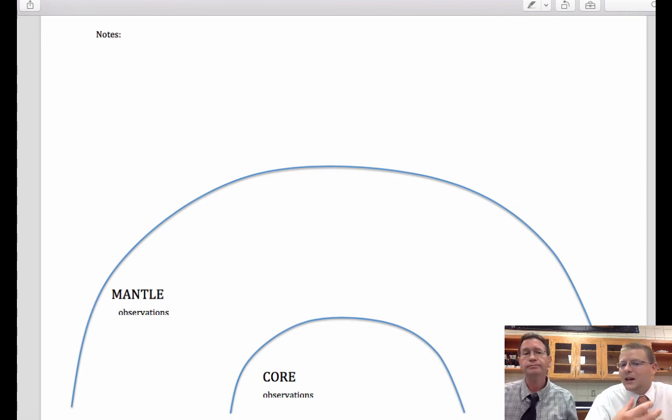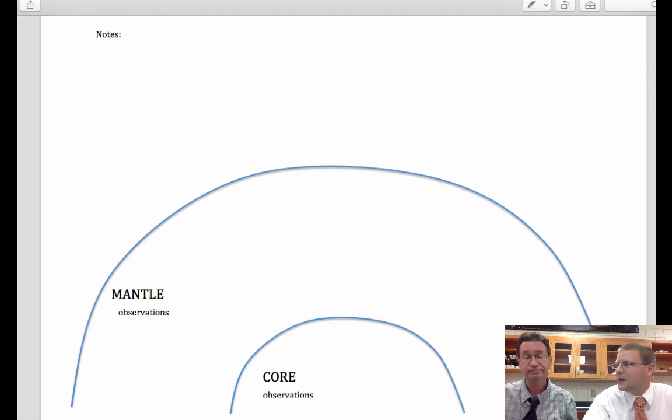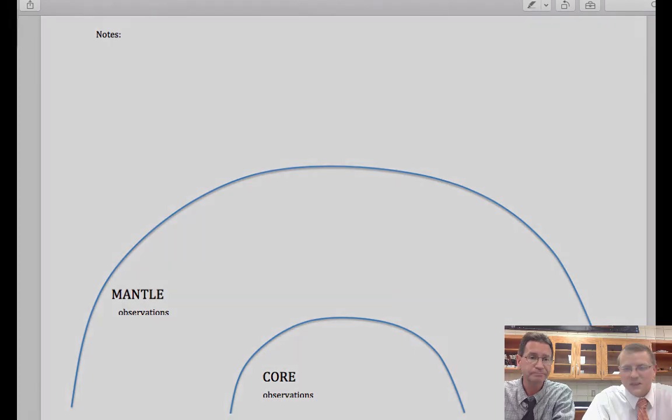So mantle heating and mantle convection is the mechanism that Wegener was missing. He didn't know about that. And now that we do know that this is how the earth heats, they came up with a whole new name for it: plate tectonics. So that will be our next topic. We need to investigate what's going to happen when each of the pieces of crust, the plates, will shift and roll on these convection cells. Sounds good? Sounds good. See you next time.